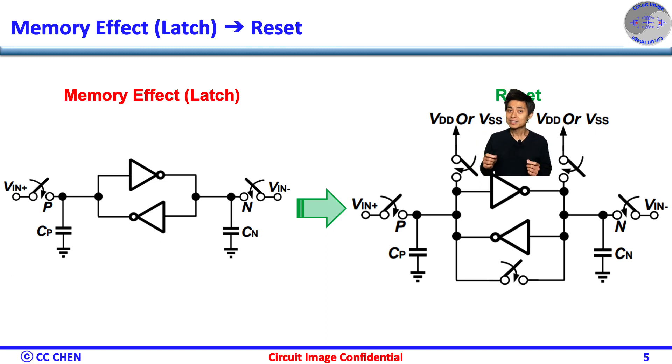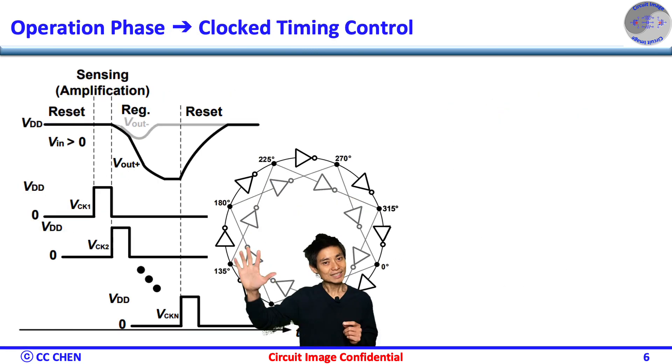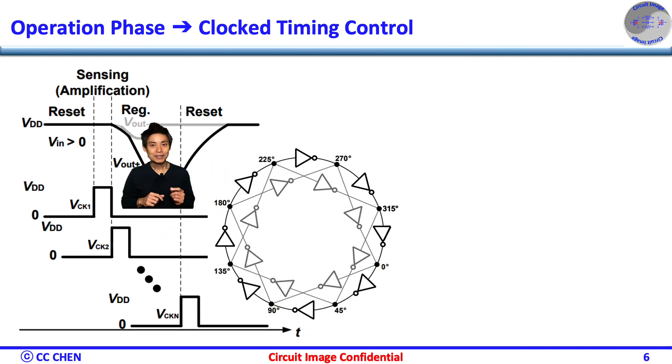Therefore, we need a mechanism to control it. Think about a clock for 5 seconds. Exactly, adding a clock for all the operation phases is a must.